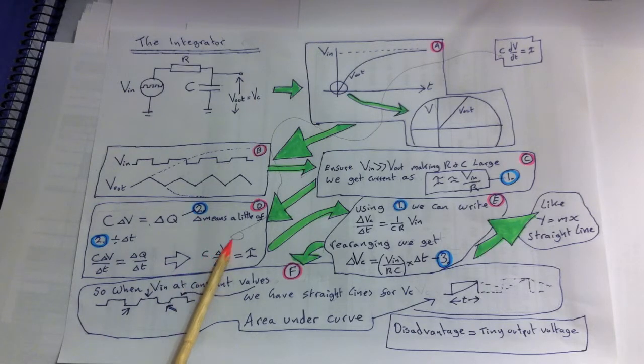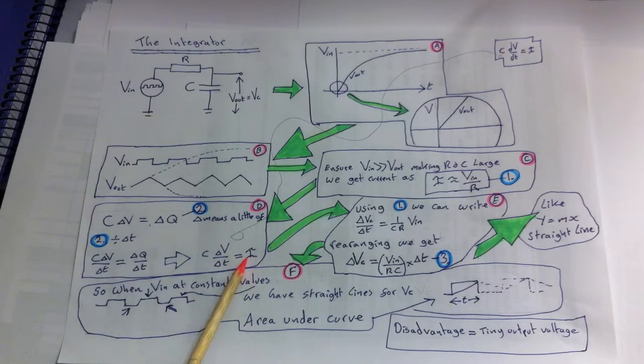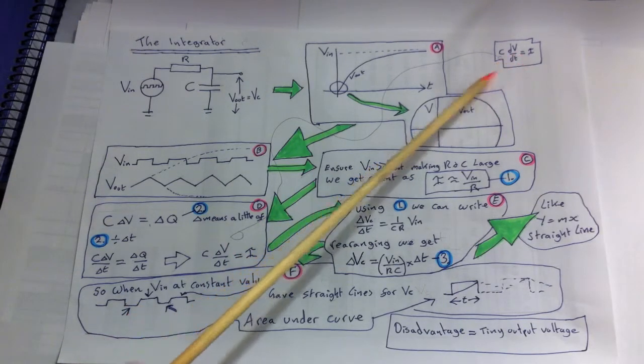So C·ΔV over ΔT equals I because we've divided through by T and basically ΔQ over ΔT is the instantaneous current. So we can just write the current down there. Those of you familiar with calculus will recognize this as C·dV/dt equals I.